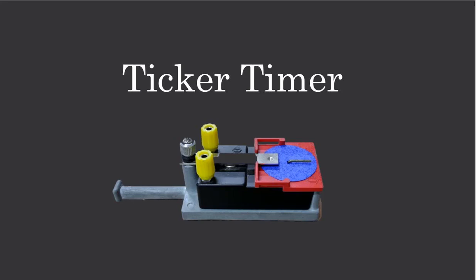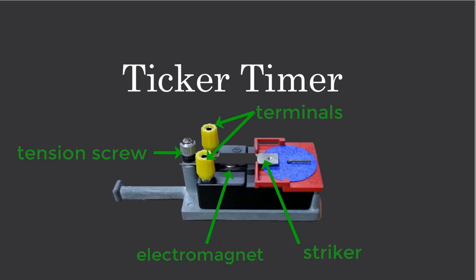First of all we have here a ticker timer. You can see it consists of a metallic striker, an electromagnet, terminals, an adjusting tension screw, an adjustable plate, and a cup and paper disc.